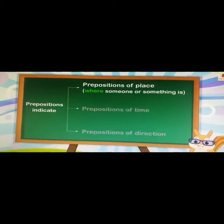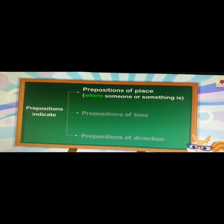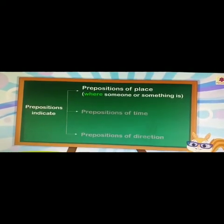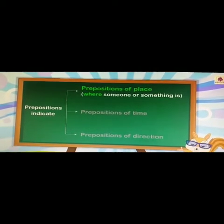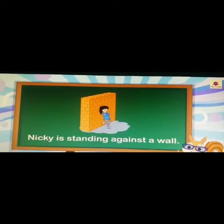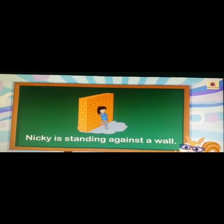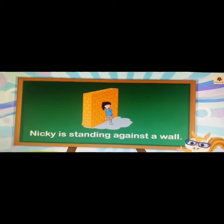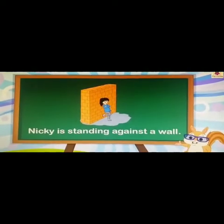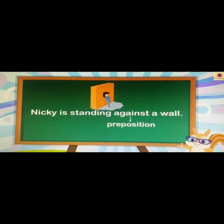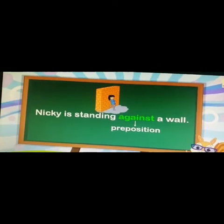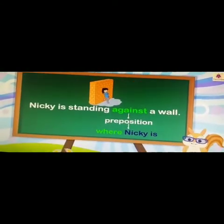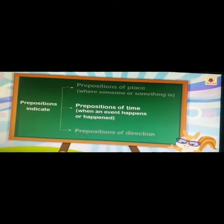For example, where someone or something is. Here is the example: Nikki is standing against the wall. So here the preposition is 'against'. Why is it used as a preposition? Because it tells us where Nikki is — she is against the wall. So this is called the preposition of place.